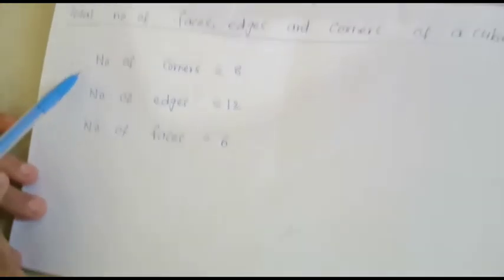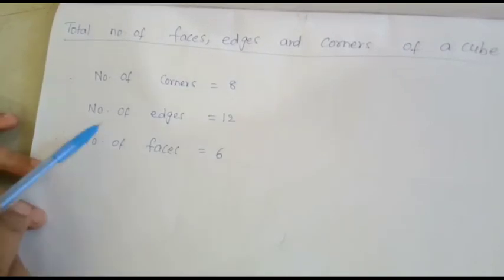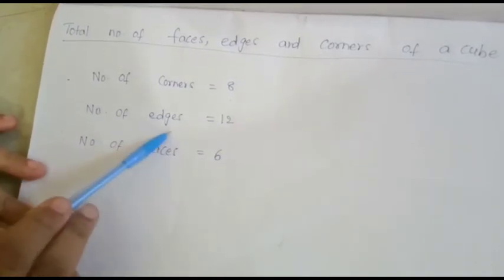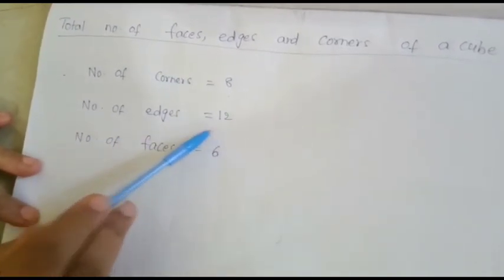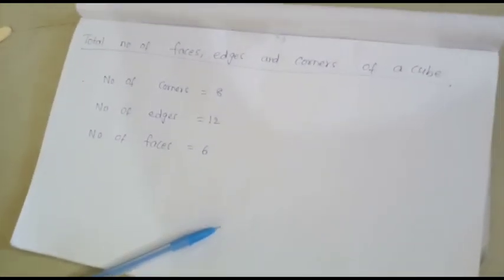So the number of corners is equal to eight, the number of edges is equal to twelve, and the number of faces is equal to six.